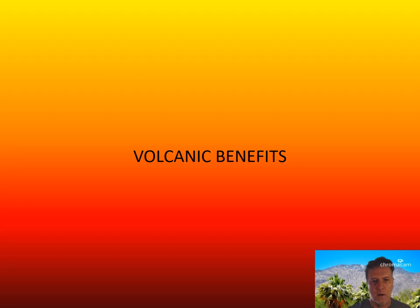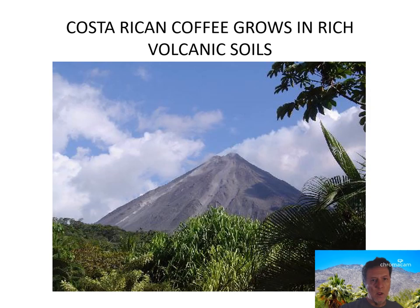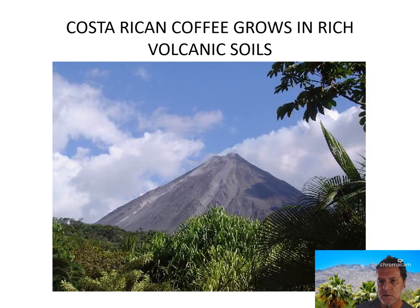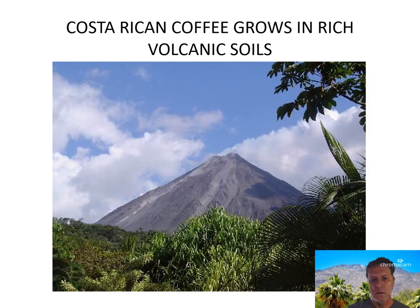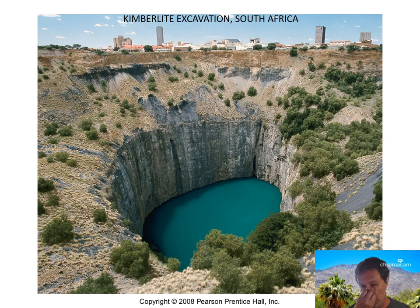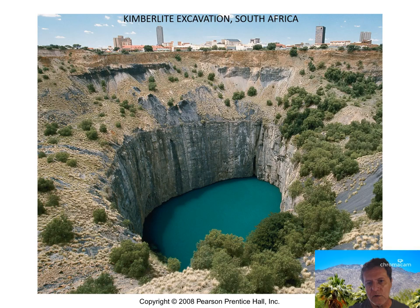Now, volcanoes are not all bad — there are some benefits. How about soil? Volcanic soils have a lot of nutrients. Volcanic soils contain volcanic glass, pumice, and ash, which readily decomposes. Glass, because it's unstable with not much crystal structure, breaks down pretty easily under chemical and physical weathering, giving us rich soils — which gives us great coffee like we get in Costa Rica, a country with lots of volcanoes and volcanic soils.